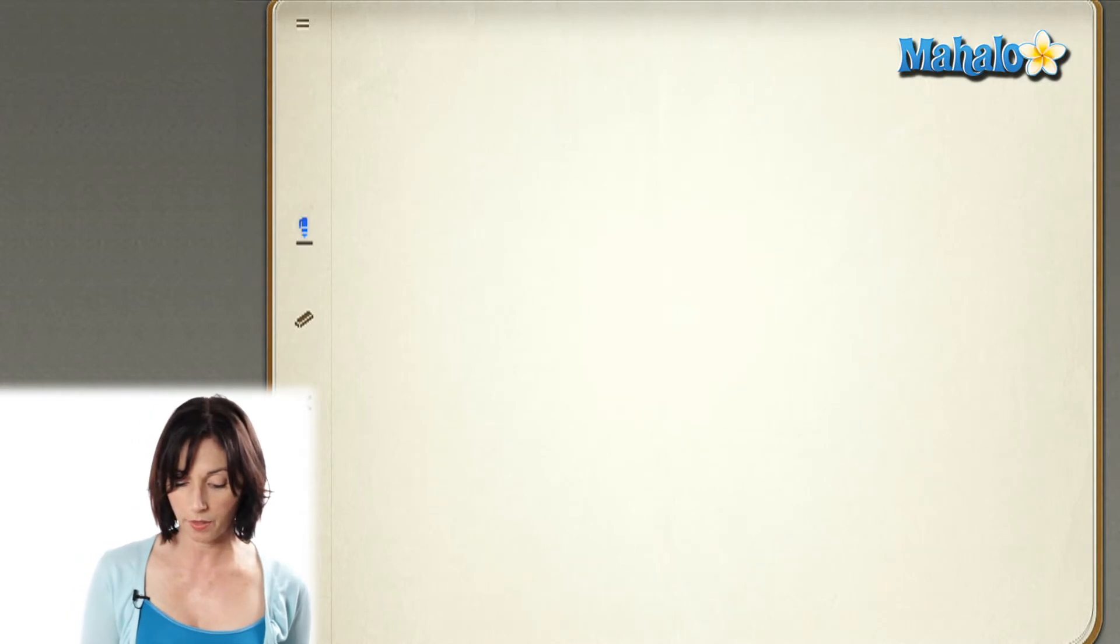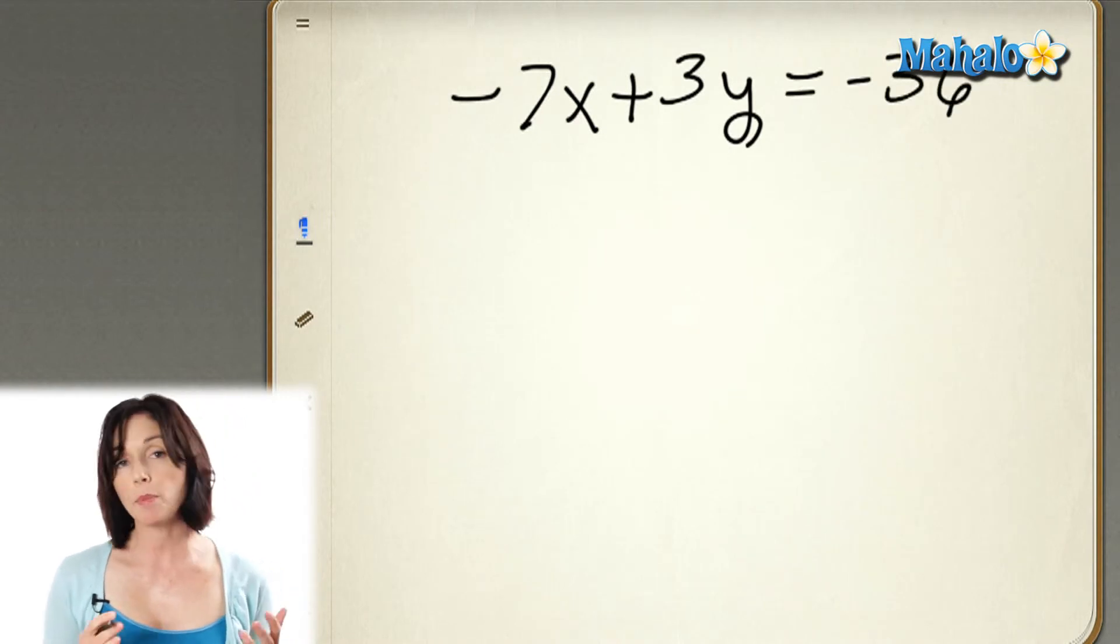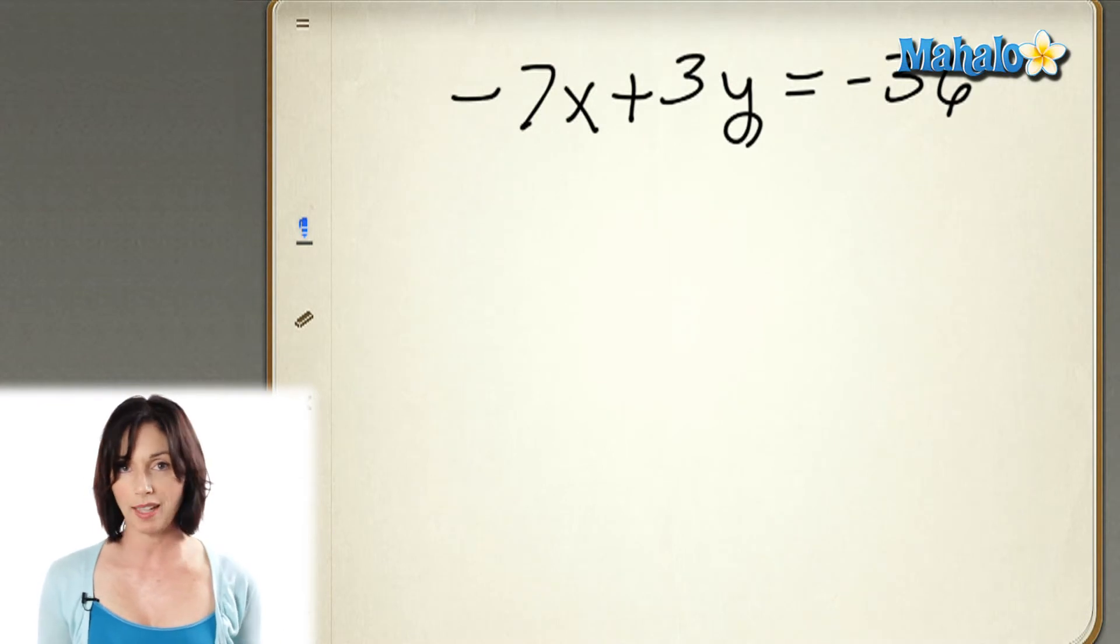So if we have negative 7x plus 3y equals negative 36, if I multiply both sides of this equation by negative 1, I can get rid of that negative sign in front of the 7. It's perfectly alright to do that.